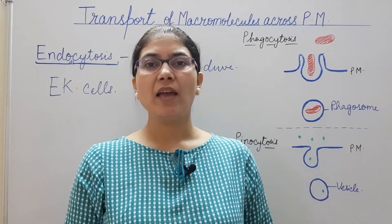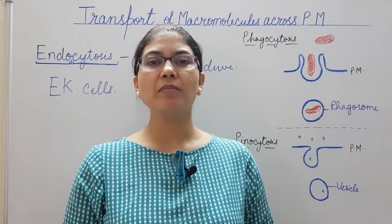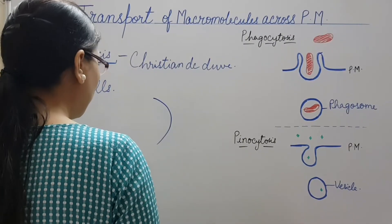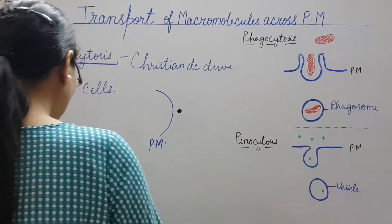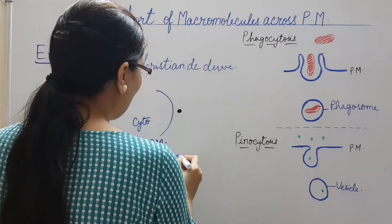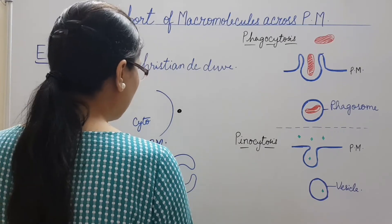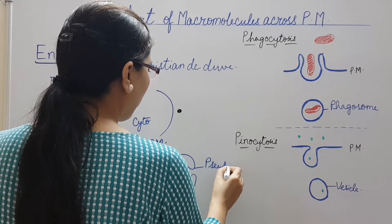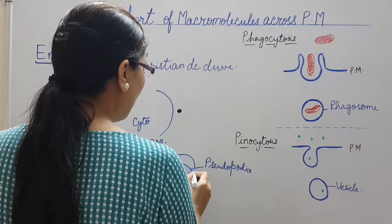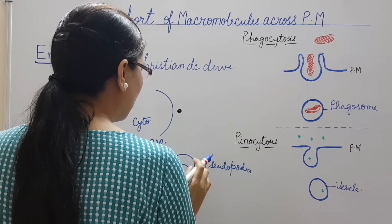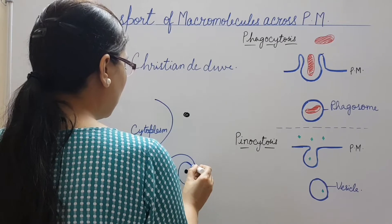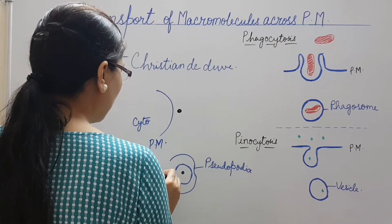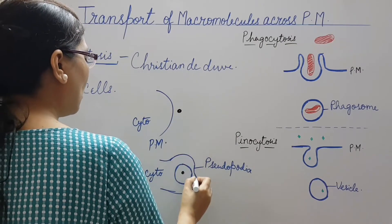Plasma membrane invaginates and surrounds the material. Then pinching of the plasma membrane takes place and a membrane bound vesicle is formed that is released in the cytoplasm. Material present outside the cell is surrounded by pseudopodia, further invagination takes place, then it is pinched off and a membrane bound vesicle is formed with the outside material present inside, and is released in the cytoplasm.